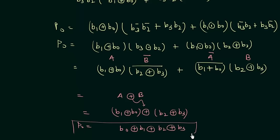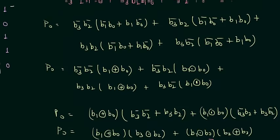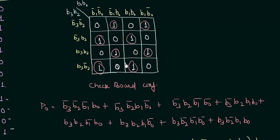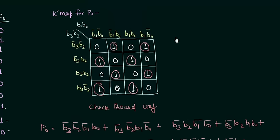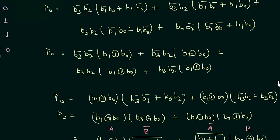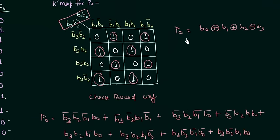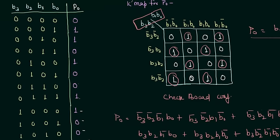Whenever there is a checkerboard configuration — a type we will also see in full adders — you can directly write the output P as the XOR combination of all inputs: b0 XOR b1 XOR b2 XOR b3. No need to go through all that simplification. Also note that P0 is the odd ones detector: whenever there is an odd number of 1s the output is high, and the odd ones detector is simply XOR. So you could have written this directly as the XOR of b0, b1, b2, and b3.